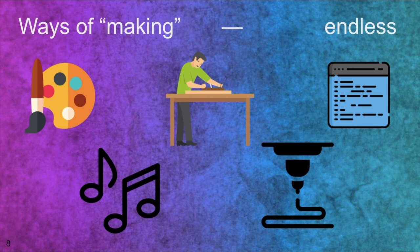Students might already be doing things that we wouldn't have thought of. Listen to them. Give them space to try things. You don't have to know how to do everything—you can't be expected to. You just have to be comfortable with exploring the unknown with others. Remember: everyone is a teacher, and everyone is a learner in an MCL environment.